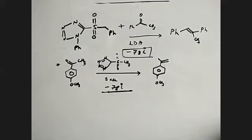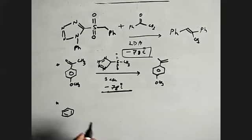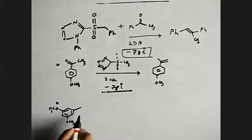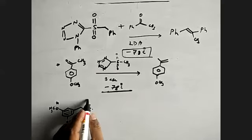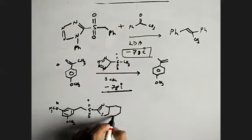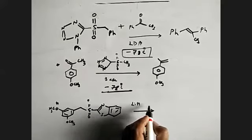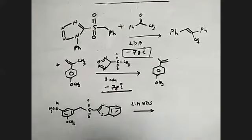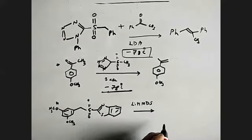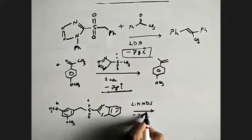One more example. Let us go for this example — very interesting thing. Can anyone judge — is that Julia Olefination or not? Yes. So one more: LHMDS, again it's a bulky base — lithium hexamethylenedisilazide. This is in THF. Minus 78 degrees, low temperature is important. And methanol or ethanol are the solvents here. What is the product? What we have here is some aldehyde compound or ketones.